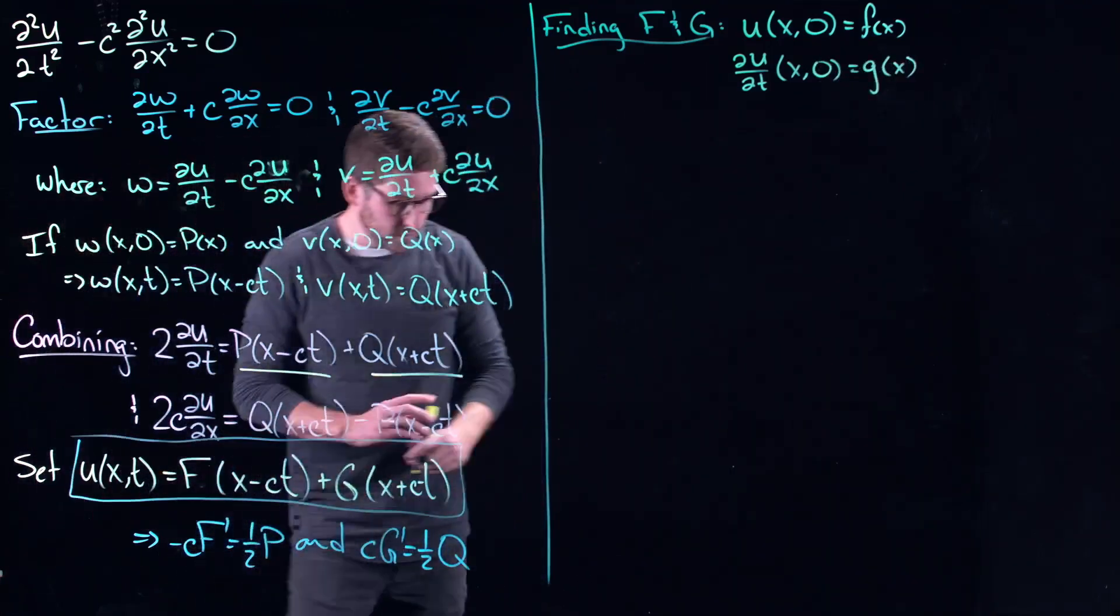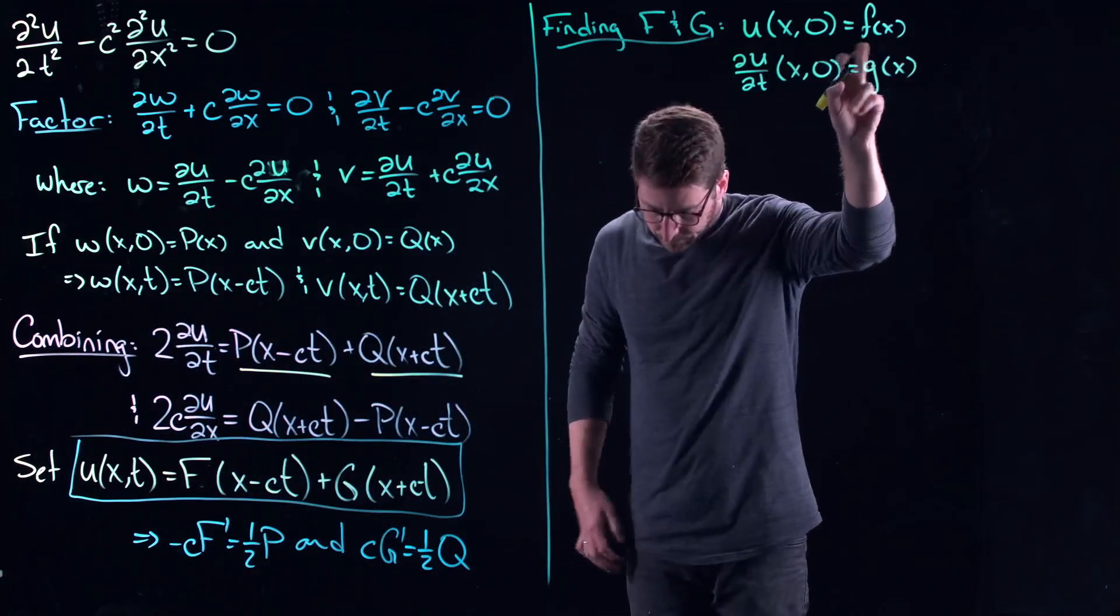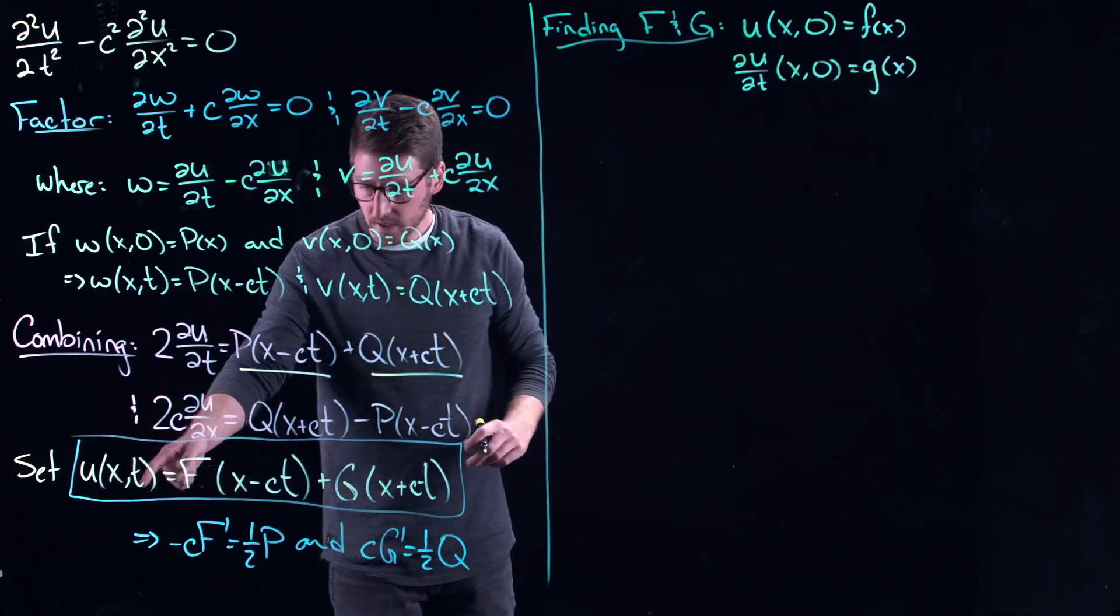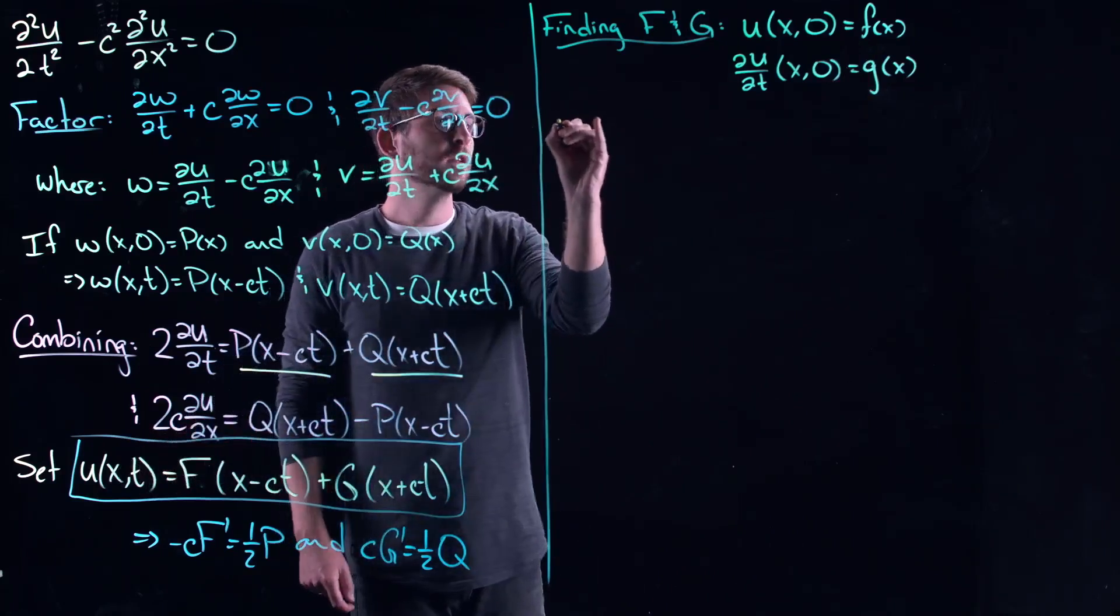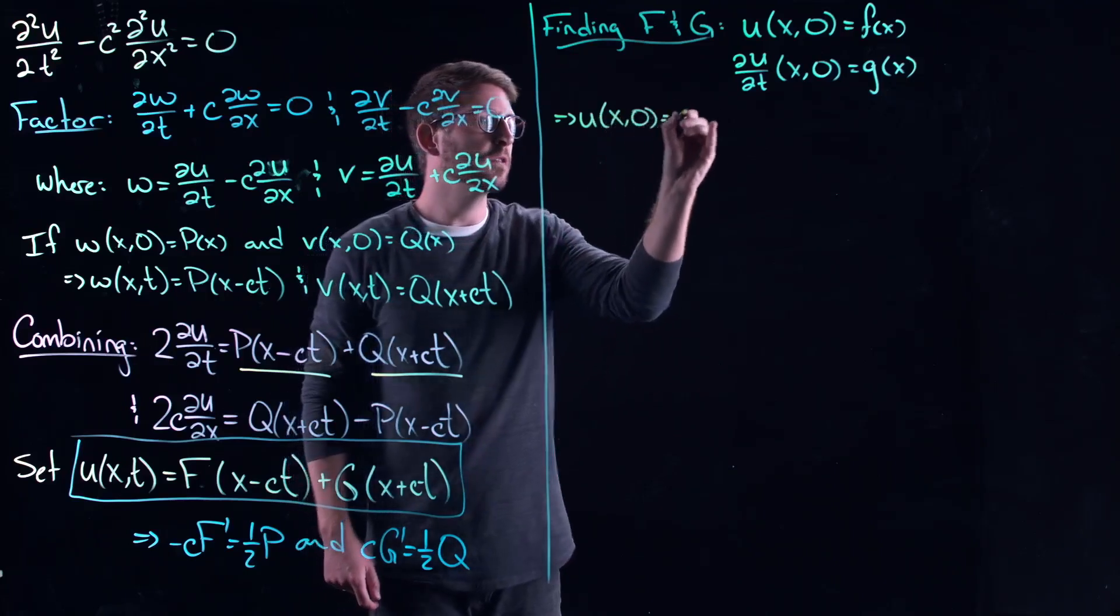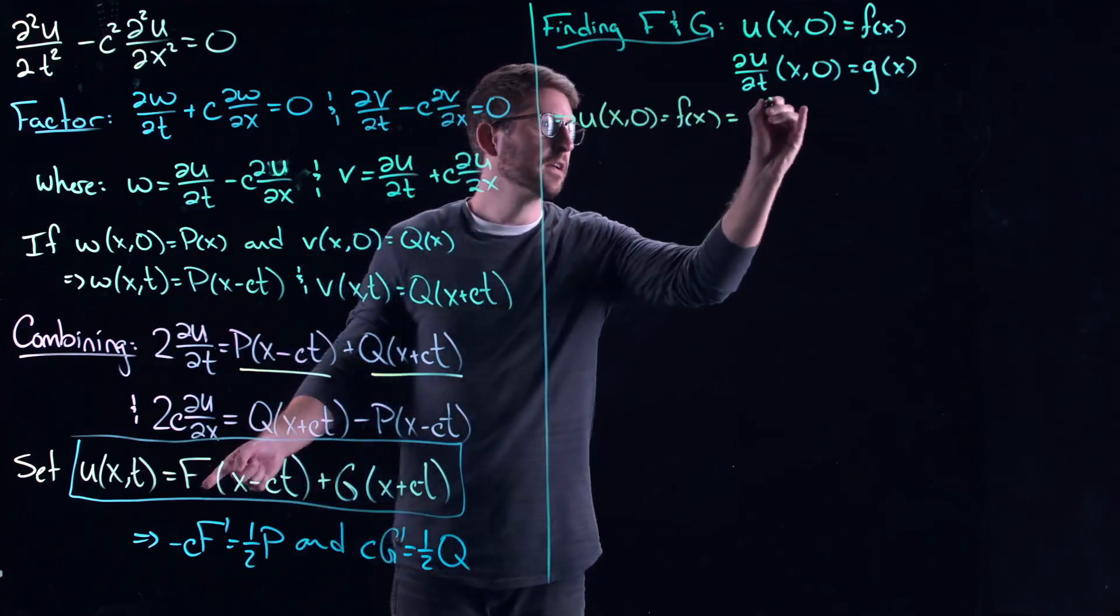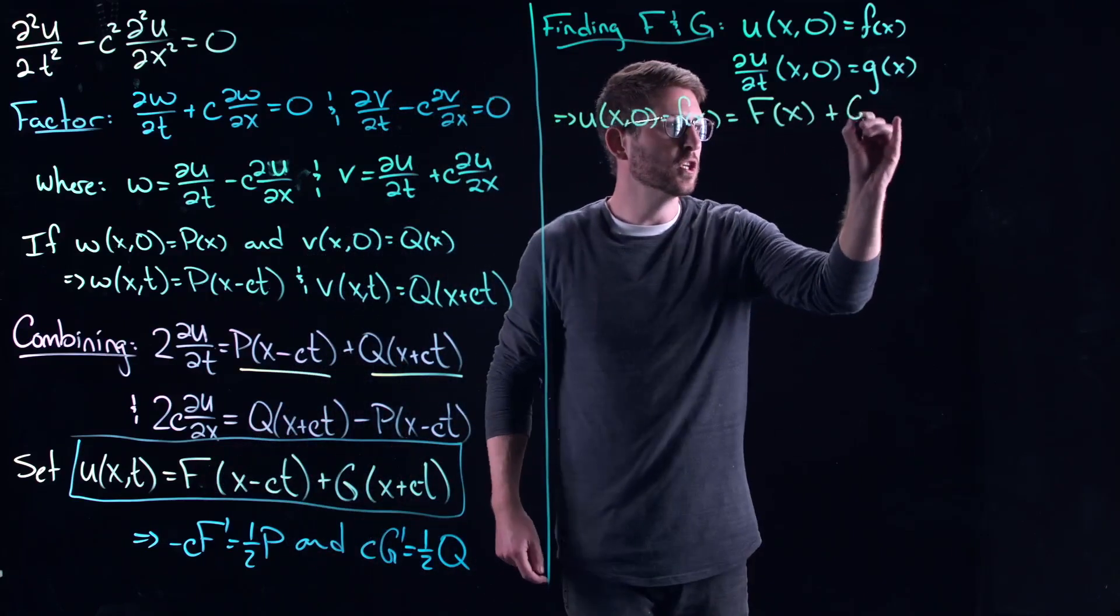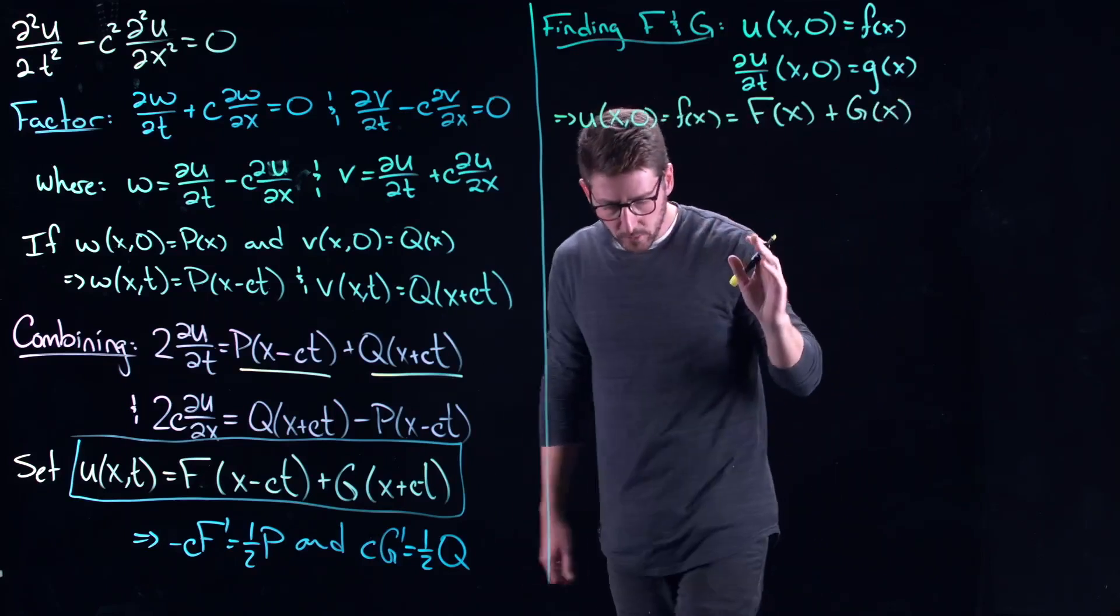So now the question is, how do you find these two pieces? Well, let's use this equation right here. If I set time equal to zero, so this implies that U of x comma zero equals F of x. And then evaluating this, I get F of capital X plus G of capital X.